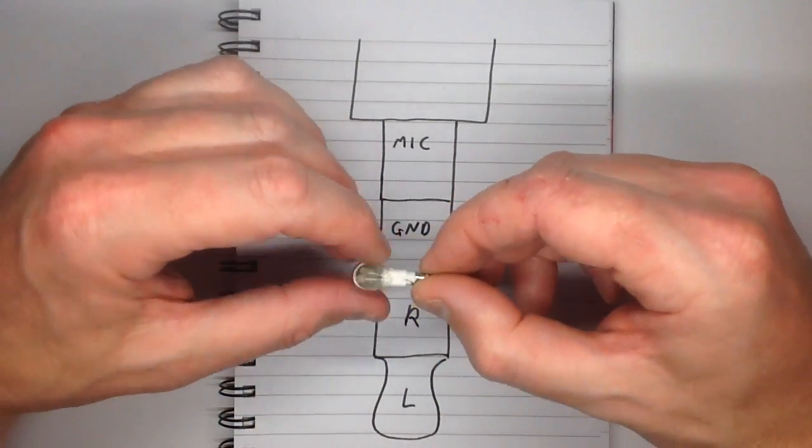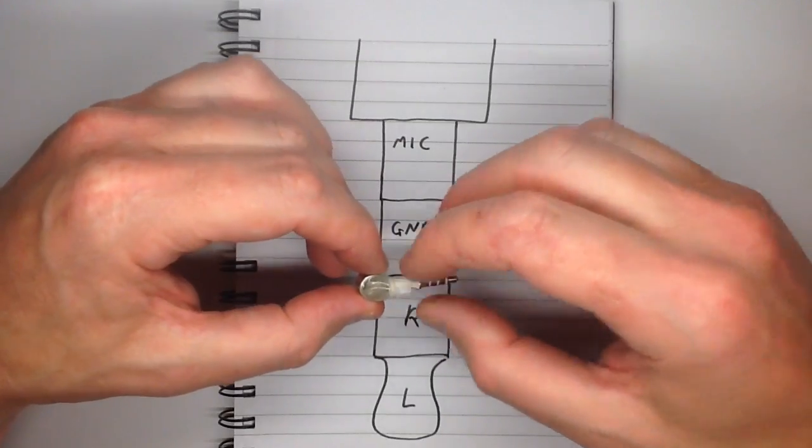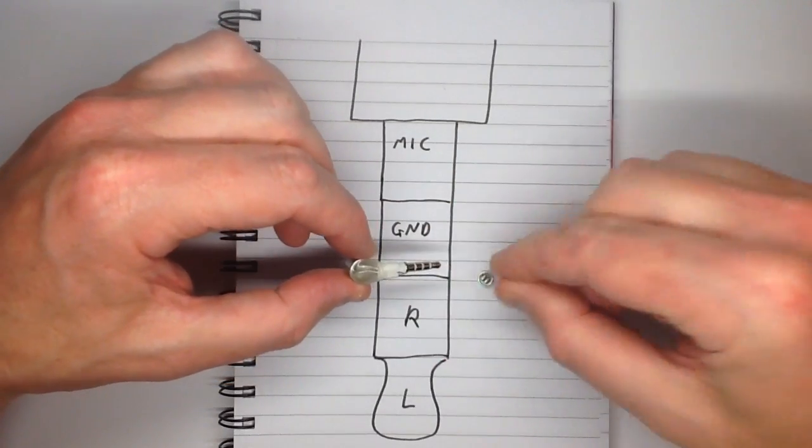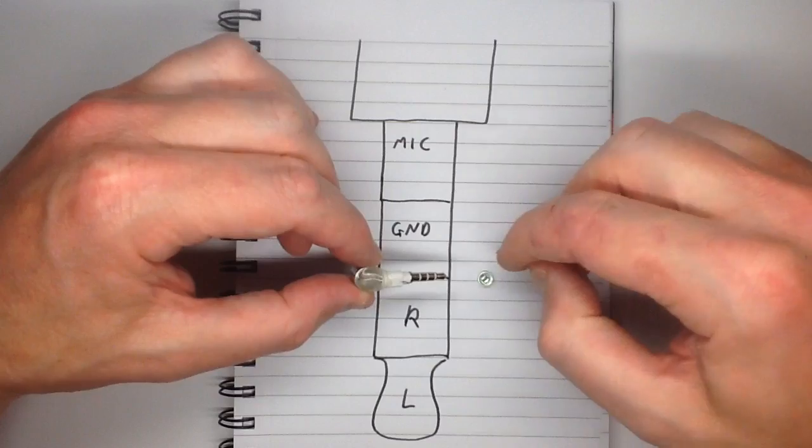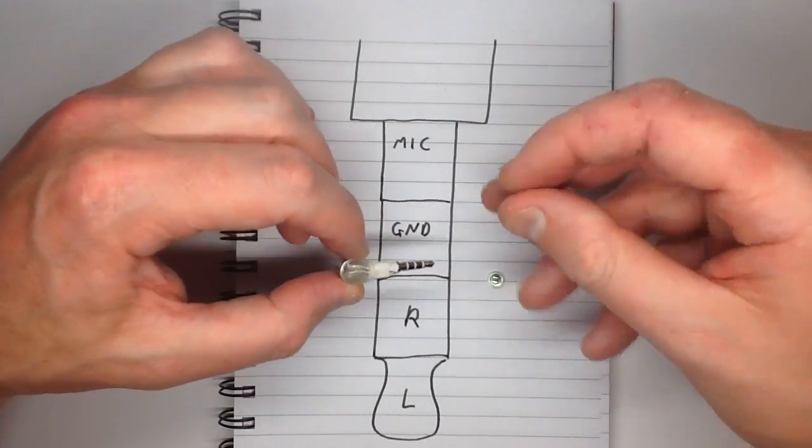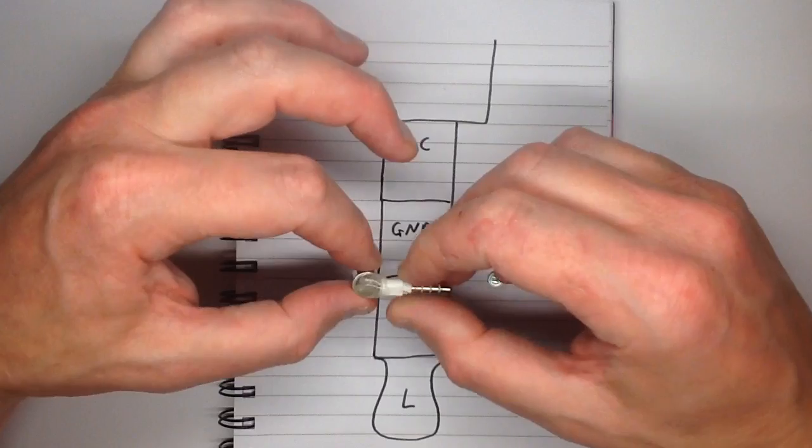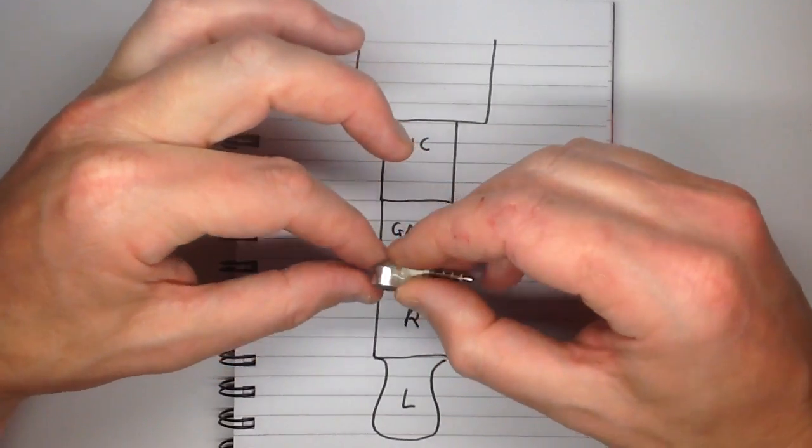So I took the original microphone off, soldered this one on with the connections the exact same way around - the one that goes to the case and the one that goes to the out, I suppose you could say the positive terminal. And then I resined it all in nice and secure.